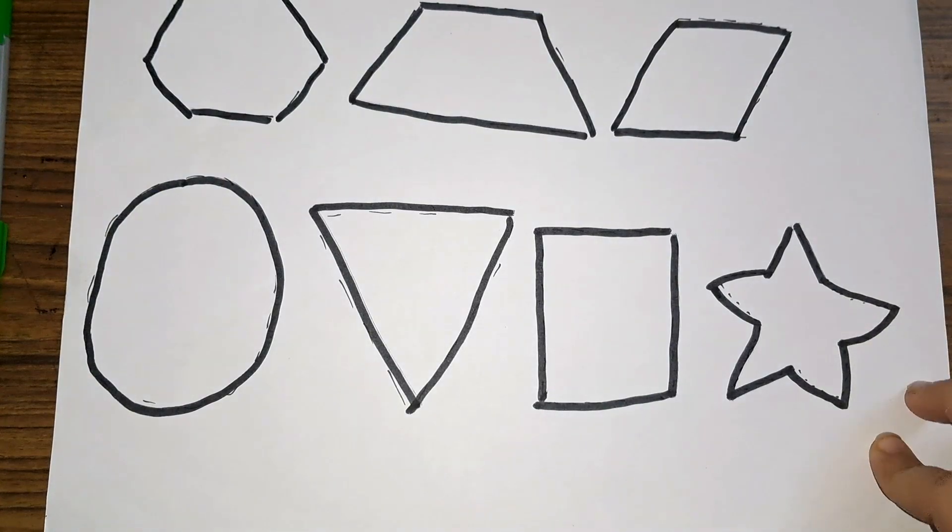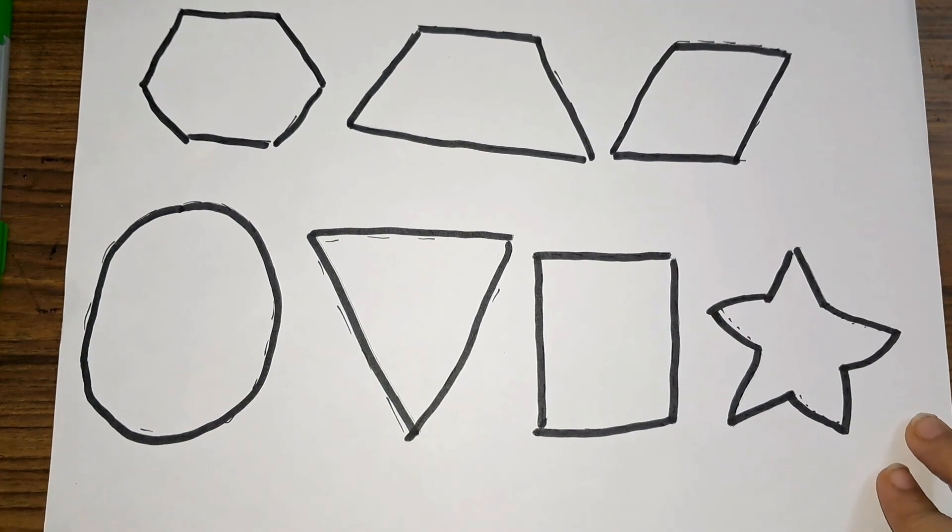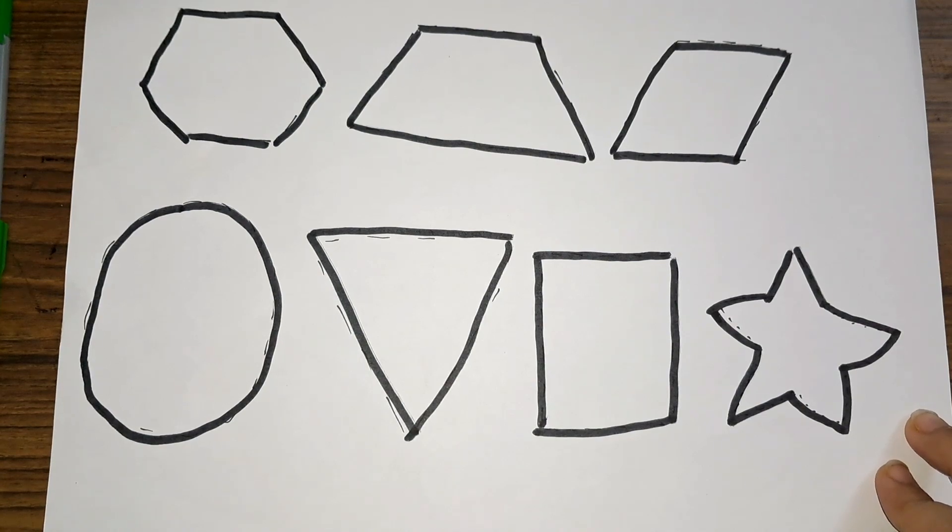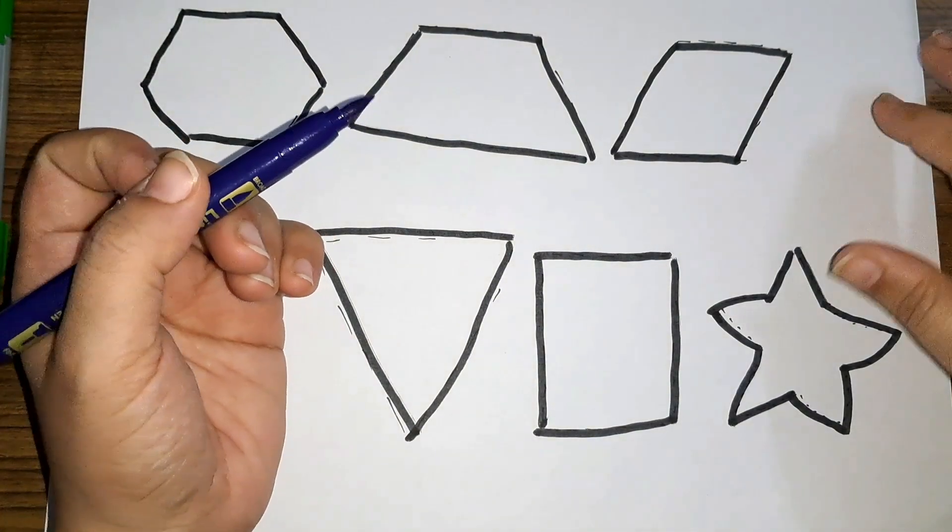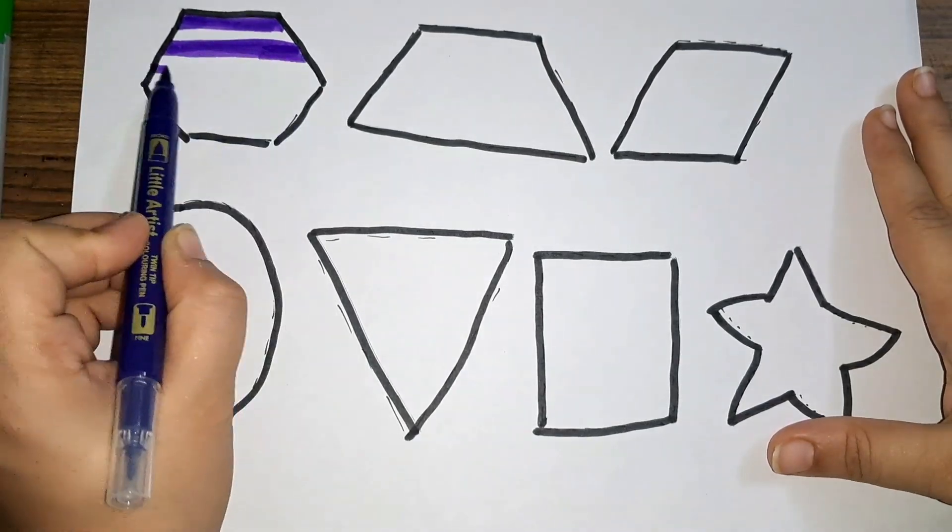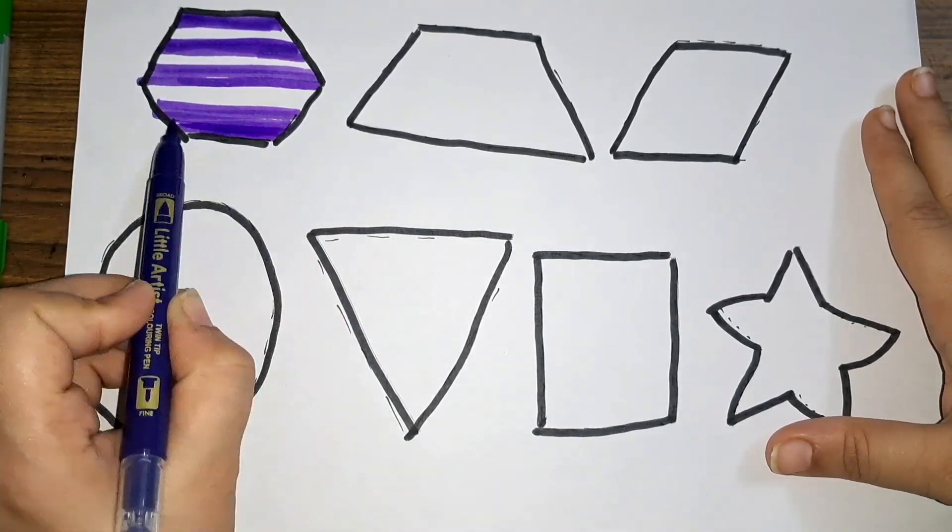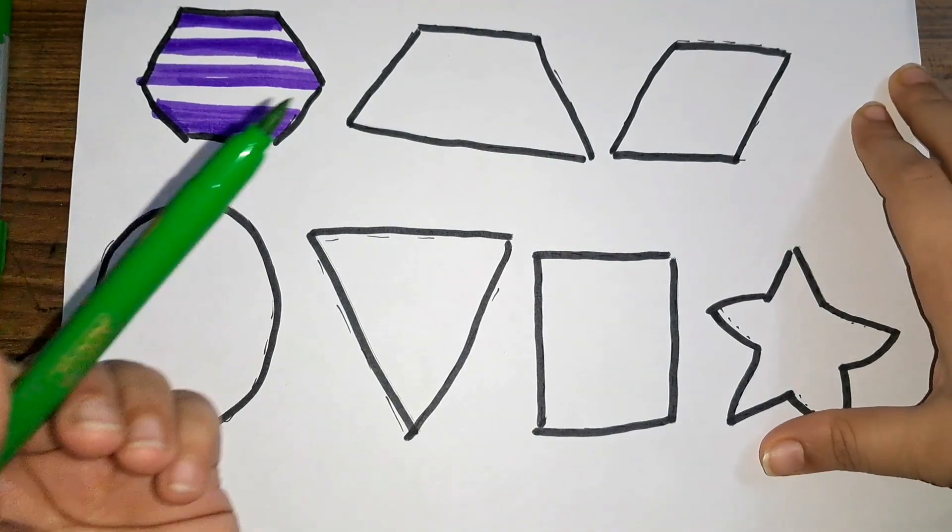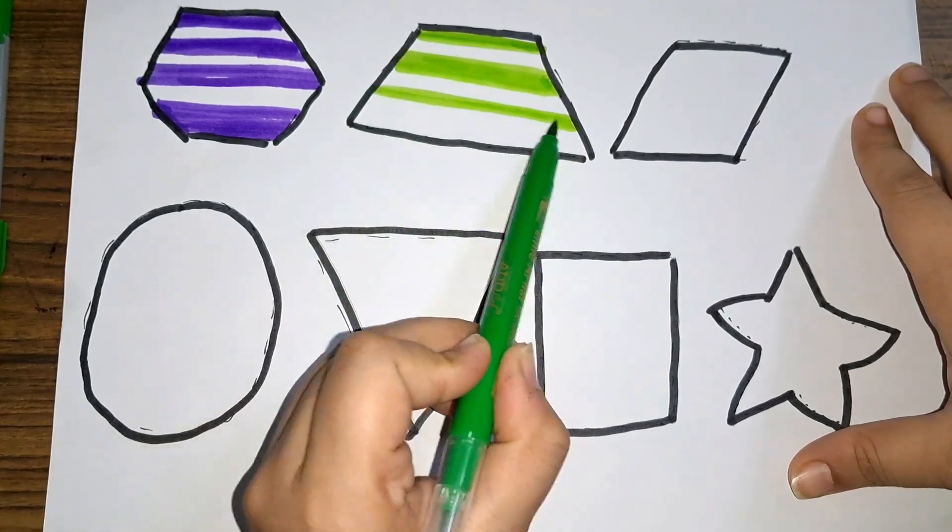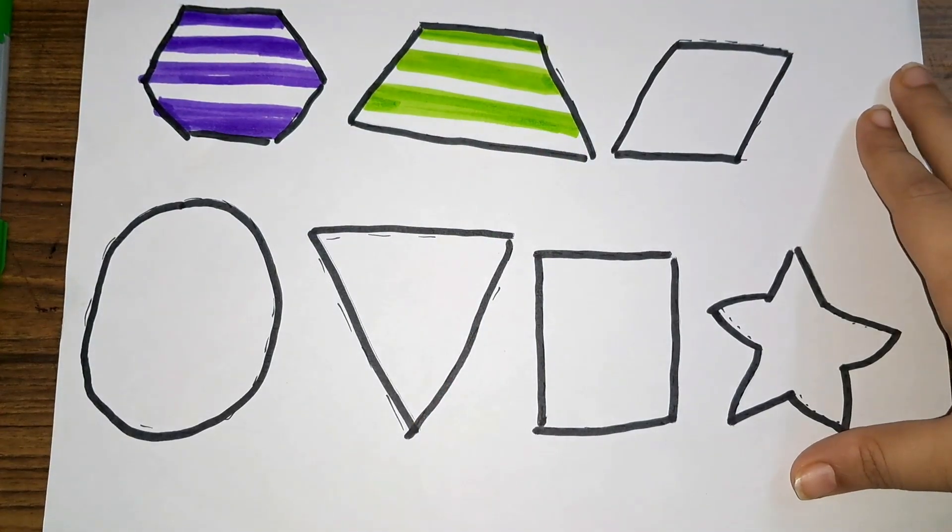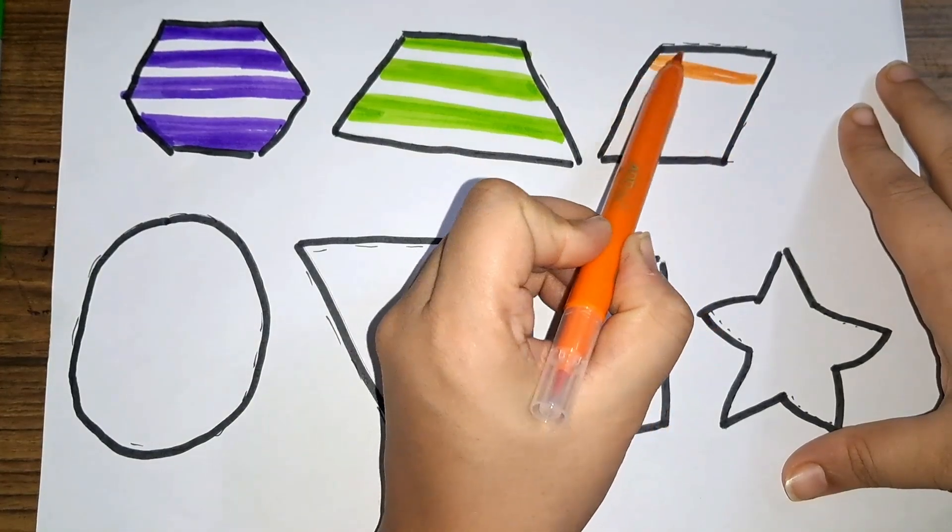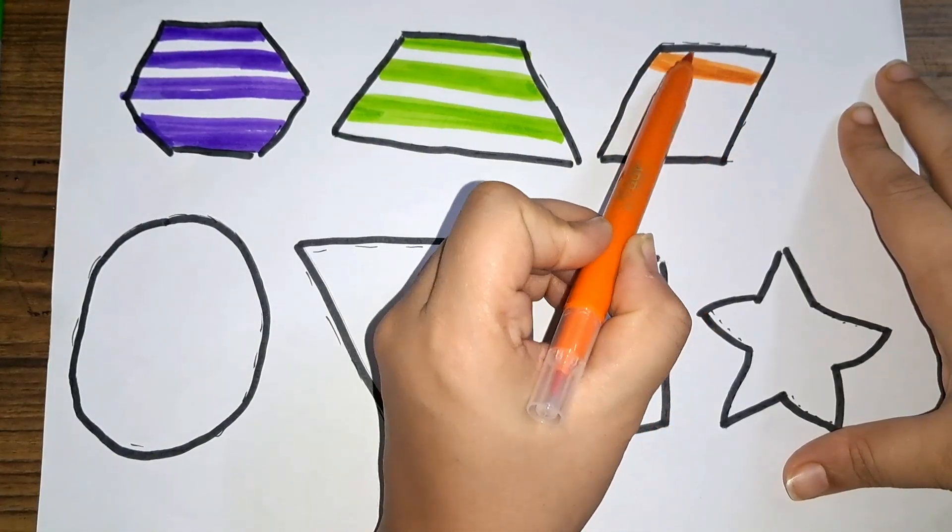Now should we color the shapes? Let's see. Let us do purple, then comes green, then we have orange. Let us color orange.